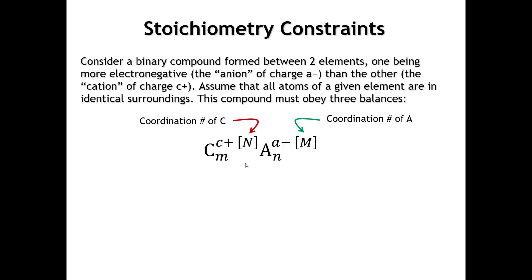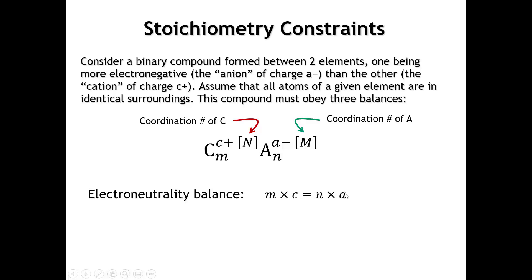One of the things we know is that we must maintain a charge balance. However many cations there are in the empirical formula — here's small m — times the charge of the cation, must be balanced by the number of anions in the empirical formula times the charge of the anion. We can use oxidation numbers just as easily as true charges. This is something almost every freshman chemistry student knows.